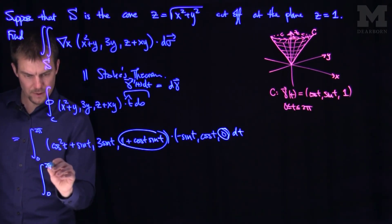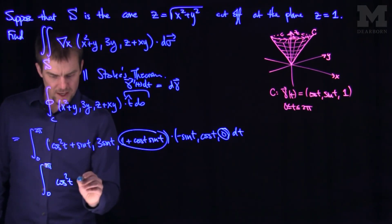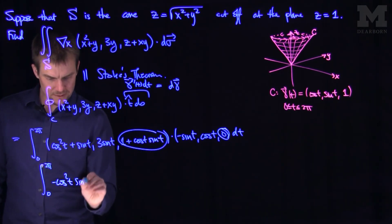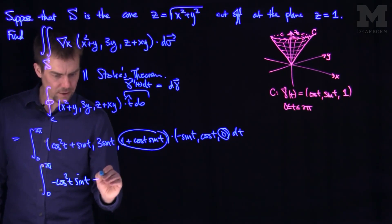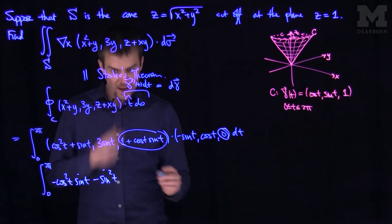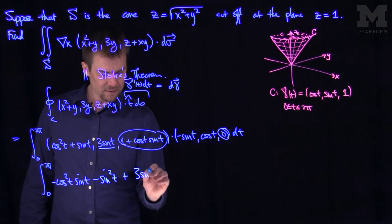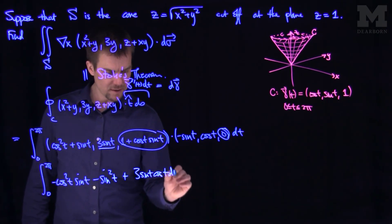So we'll get the integral from 0 to 2 pi. And we'll have cosine squared of T times negative sine of T, then minus sine squared of T. And then we have 3 sine of T times cosine of T. So I'm going to have plus 3 sine of T cosine of T dt.